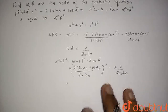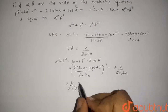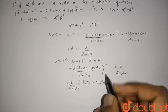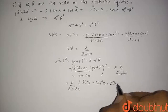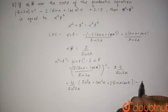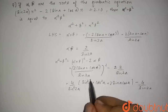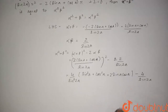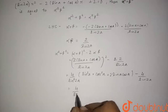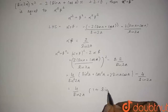Opening this expression, we get 4 upon sin²(2a) times (sin²(a) + cos²(a) + 2 sin(a) cos(a)), minus 4 upon sin(2a). Since sin²(a) + cos²(a) equals 1, and taking 4 upon sin(2a) as a common factor, we are left with 1 plus 2 sin(a) cos(a), which can be written as sin(2a).